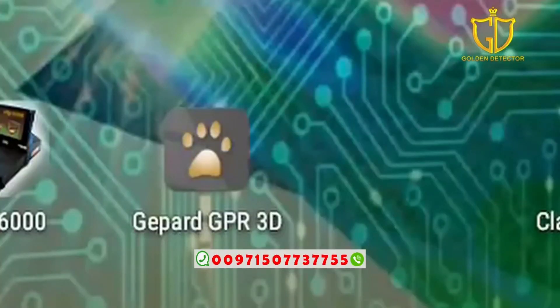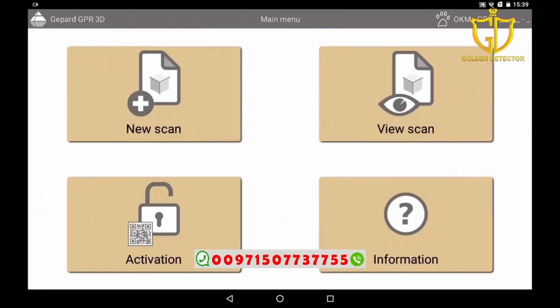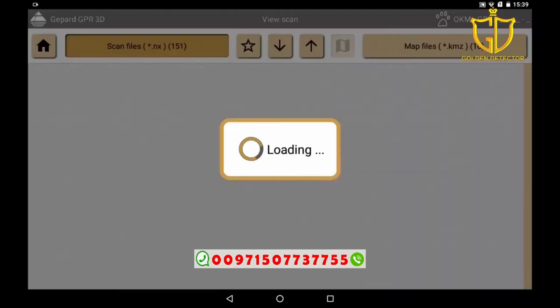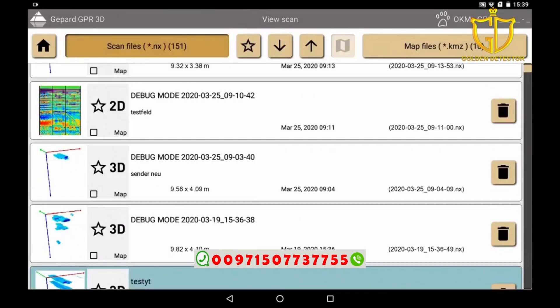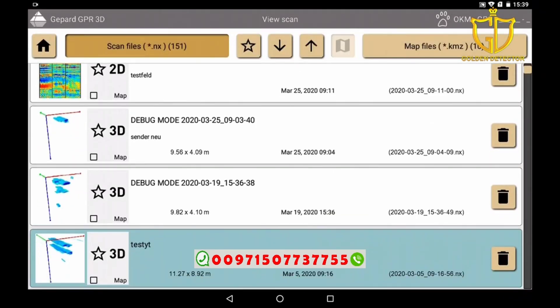First we start the GPOD GPR 3D app on the tablet. Then we choose view scan and select our saved scan, in our case test YouTube.